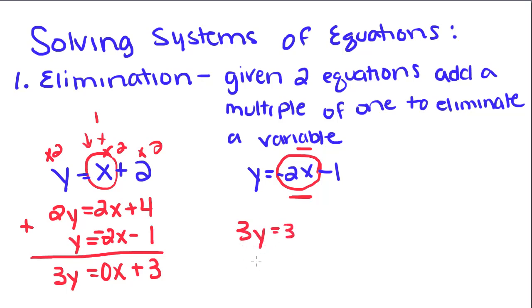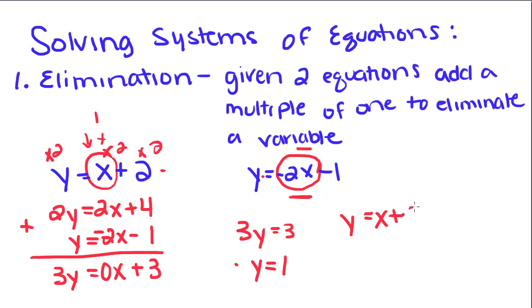So now we have 3y equals 3. Divide by 3 and you get y equals 1. Now we take this y and plug it into either one of the equations — we'll do both just to show you get the same answer. So for y equals x plus 2, since y equals 1, we plug it in and get 1 equals x plus 2. Subtract the 2 and you get x equals negative 1.